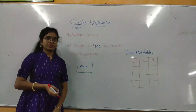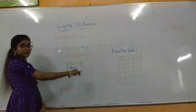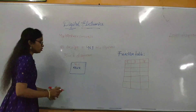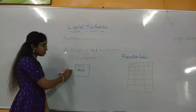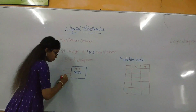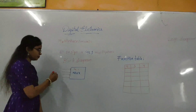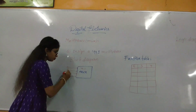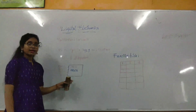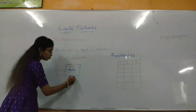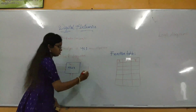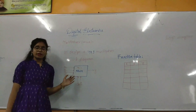Now let us design a 4-by-1 multiplexer. A 4-by-1 multiplexer contains 4 input lines and 1 output line. Drawing the block diagram: there are 4 input lines denoted D0 through D3, 2 selection lines denoted S0 and S1, and the output line is Y.